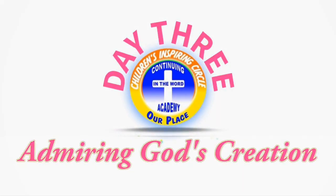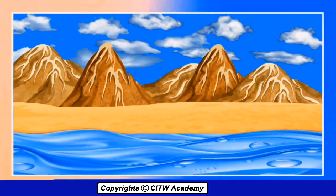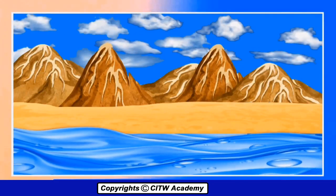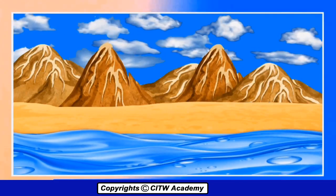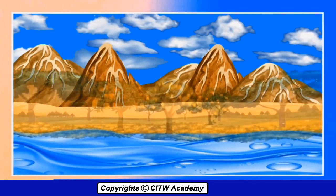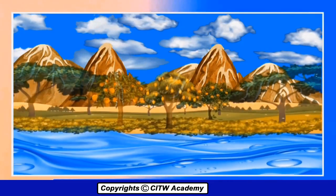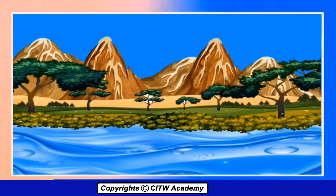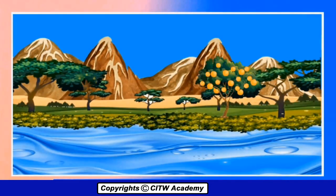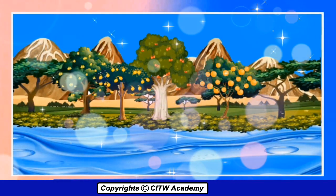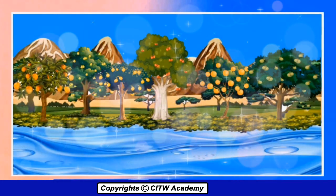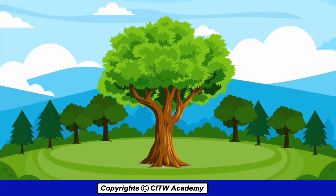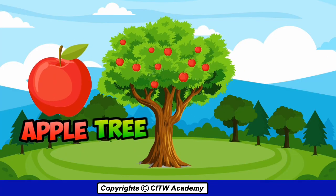Day three after the separation of the land and sea, God said let the earth grow grass, plants that make grain and fruit trees with seeds in it. God blessed us with various types of fruits among thousands of trees created on the third day. The delicious apple tree was one of them.